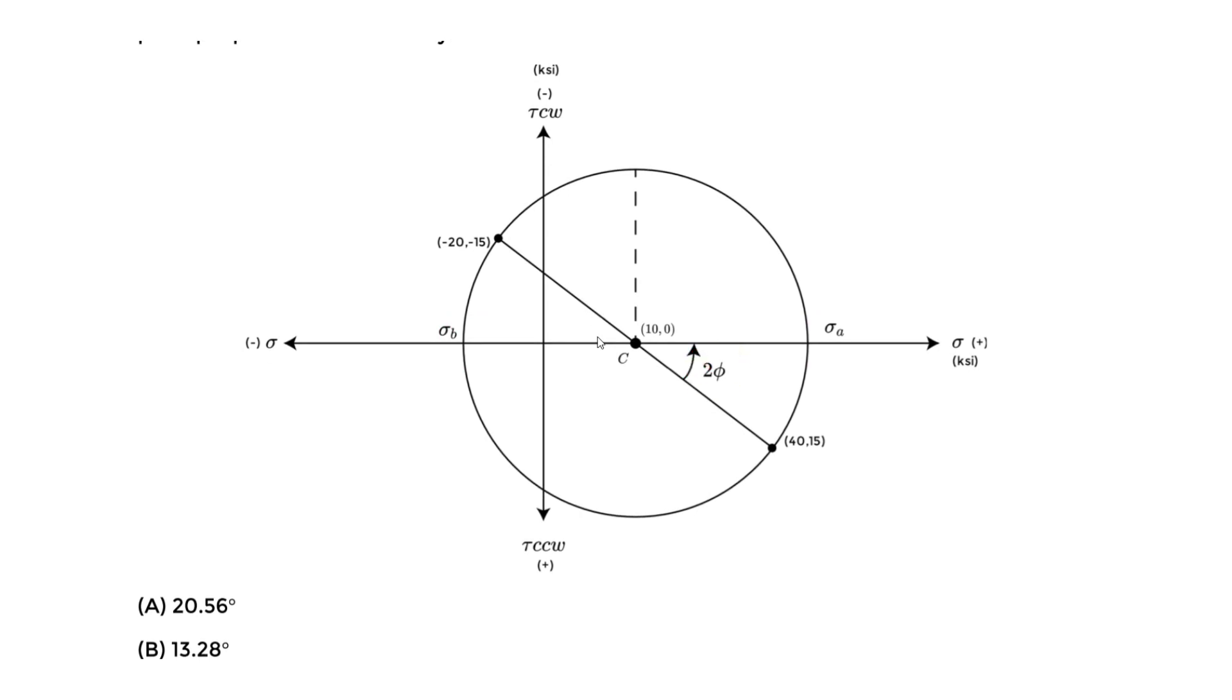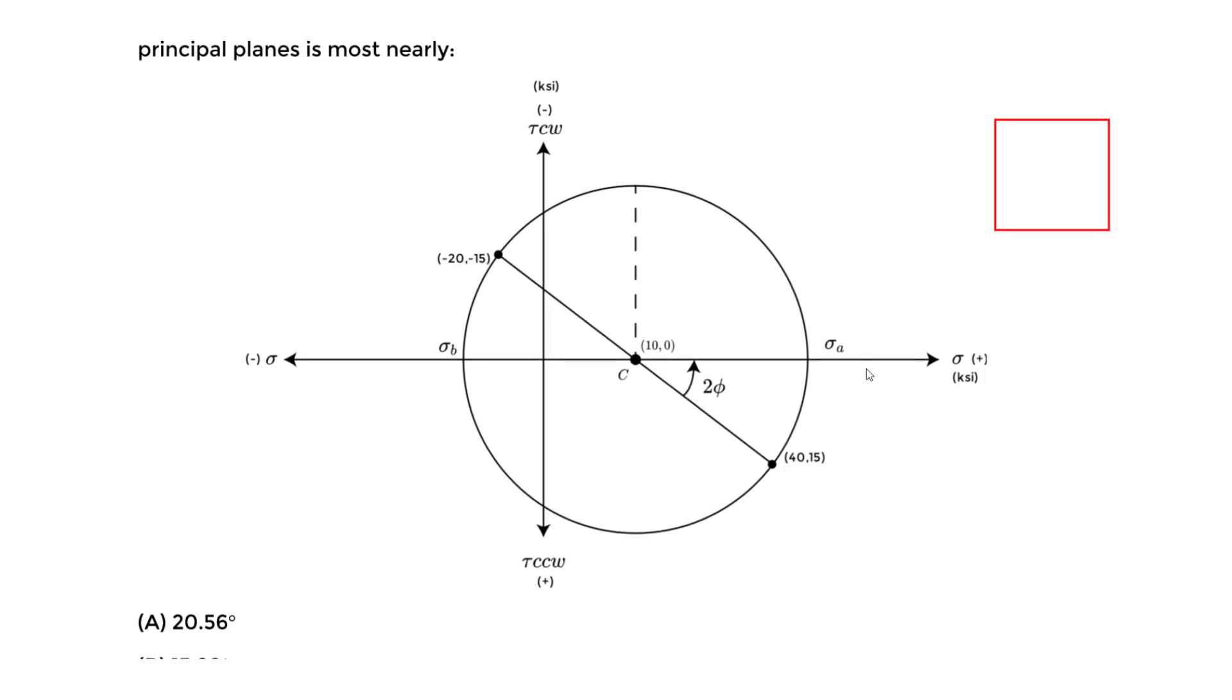So it's always 2φ on the Mohr circle. And we might recall on the stress element, which is the original element, it might be the rectangle, it's always going to be just φ. It's not 2φ. On the Mohr circle is 2φ. On the stress element it's just φ. So you cut that in half. Just always remember that.